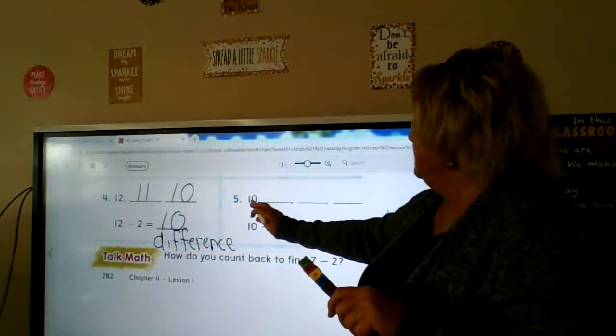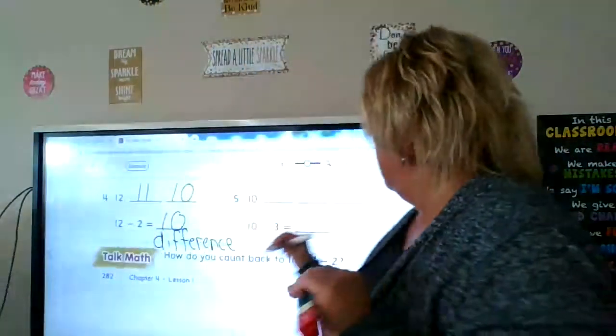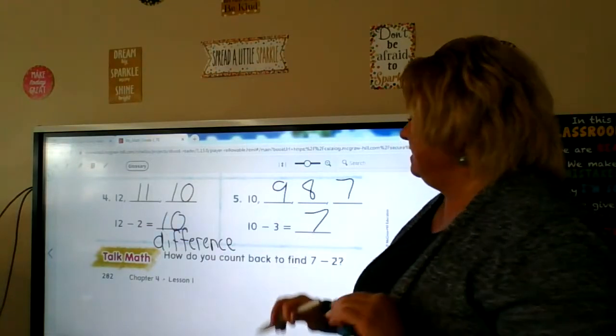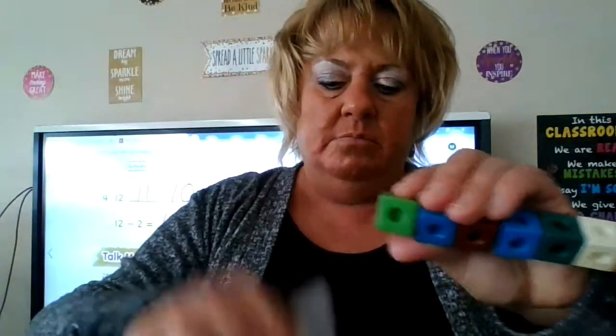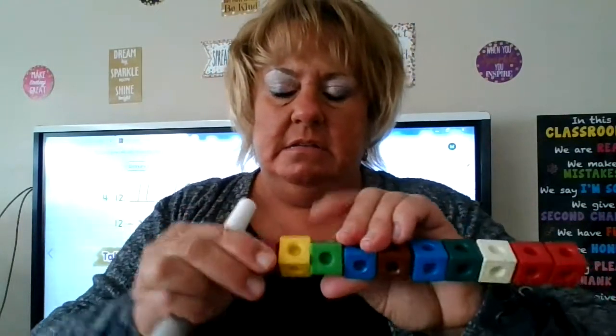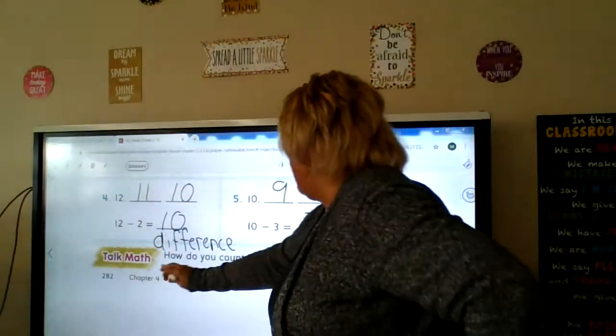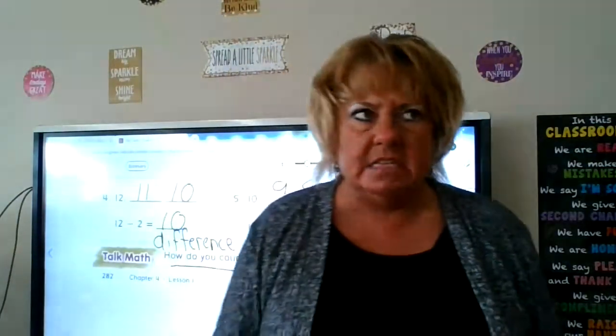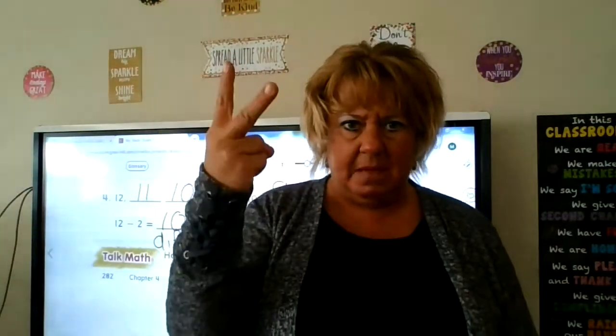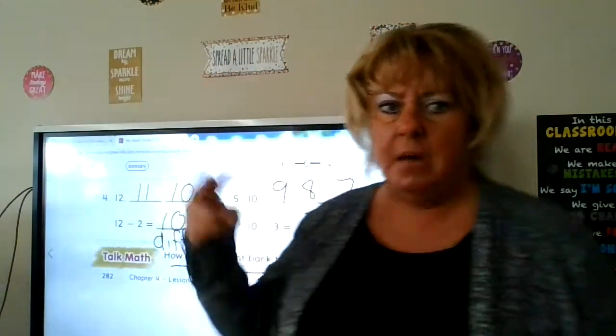Next one: 10 minus 3. Ten, nine, eight, seven — ten minus three is seven. How do I check it? Work backwards: is 7 plus 3 equal to 10? Seven, eight, nine, ten — it is! How do you count back to find 7 minus 2? You can use counters, Cheerios, or whatever you have: seven, six, five. Also, a very easy way is just to use your fingers: seven, six, five — you count backwards.